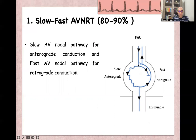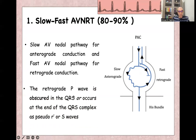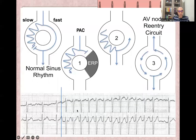The premature atrial contraction finds the fast pathway still refractory, so it goes through the slow pathway only. Once it reaches the end of the AV node, it goes up through the fast pathway, depolarizing the atria again. This leads to the appearance of a retrograde P wave, which is obscured or hidden within the QRS complex itself, or may appear at the end of the QRS as a pseudo-R or pseudo-S wave.